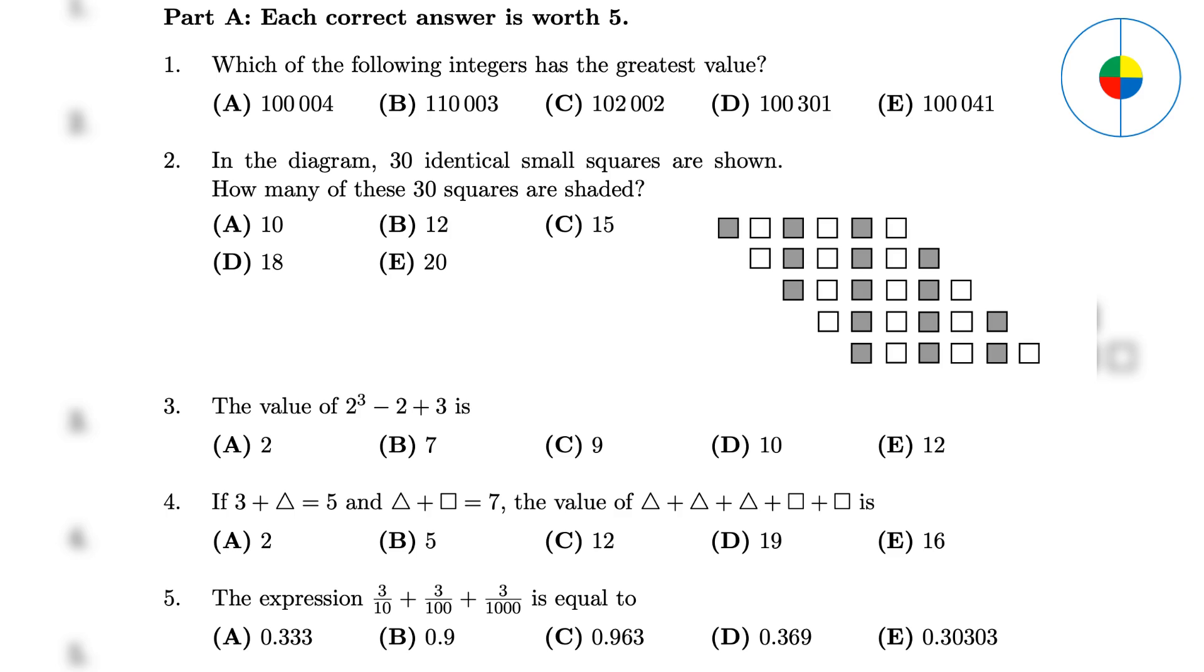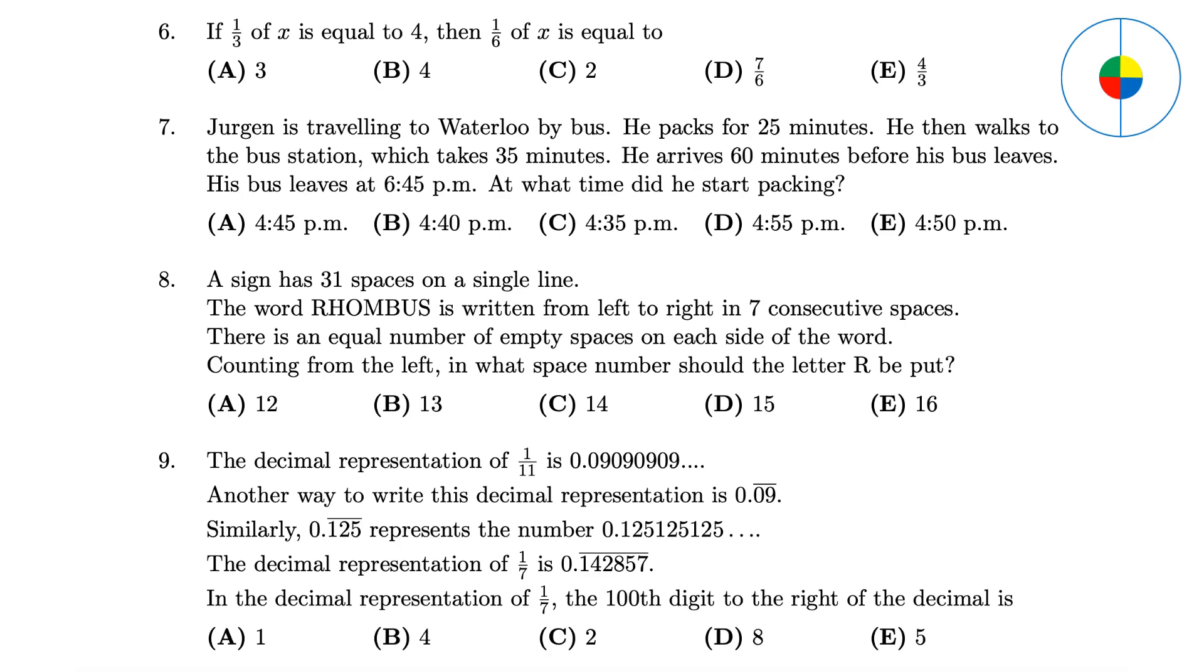Question 4 - This is a simple algebra. Triangle is 2, and square is 5. The answer is 16. Question 5 - This is a simple calculation. The answer is A. Question 6 - This is a simple algebra. X is 12. The answer is 2.